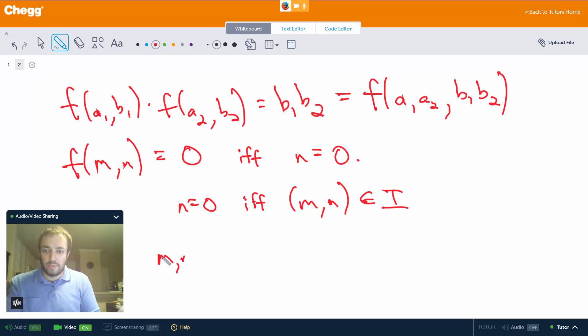So in other words, if and only if (m,n) is in I. So what that means actually is that I equals the kernel of f.